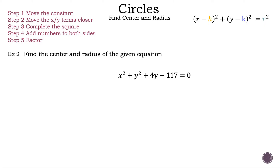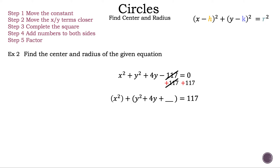Now let's reread the equation: x squared plus y squared plus 4y minus 117 is equal to 0. We need to move that constant negative 117 to the other side. So let's add 117 on the left-hand side — those numbers cancel — and now we need to add 117 on the right-hand side. In this case all the xy terms were close together so we didn't have to move anything around, but we did put parentheses around them so we can see what is happening a little bit easier.